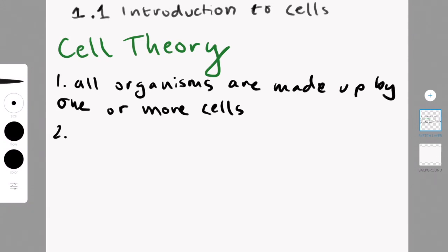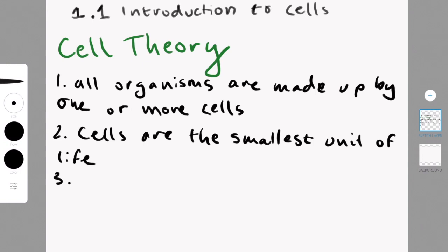The second assumption is cells are the smallest unit of life. This one hasn't necessarily been proven, it just hasn't been disproven yet. People have been looking for years into the different parts of cells to see if they are living, and the answer is just no, they're not. So thus far, there hasn't been anything to disprove this.